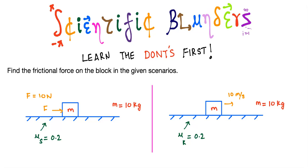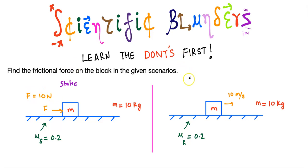Having paid our tribute to friction, let's work on the problem at hand. We want to find the frictional force on a block in two given scenarios. We have a block of mass m = 10 kilograms, and in both cases the frictional coefficient is 0.2. In one case the block is stationary and an external force of 10 newtons is being applied. In the other case there is no external force but the block is moving at 10 meters per second.